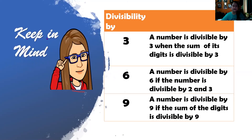How about 895? 8 plus 9 is 17, plus 5 is 22. The answer is correct: not divisible by 9.